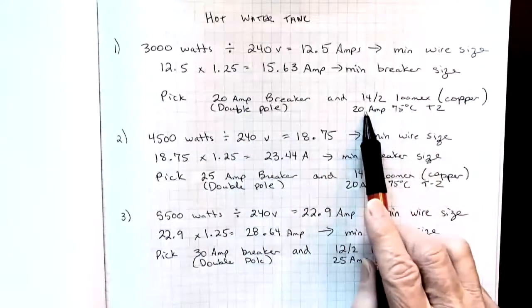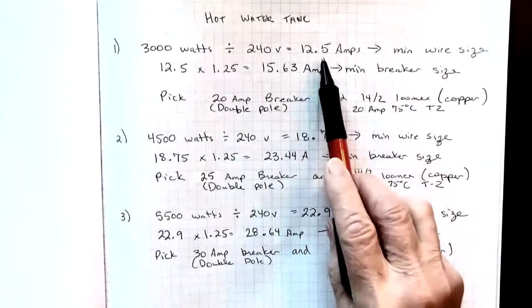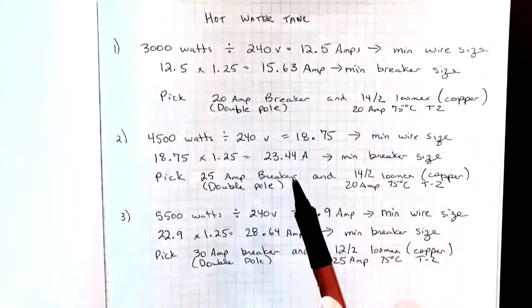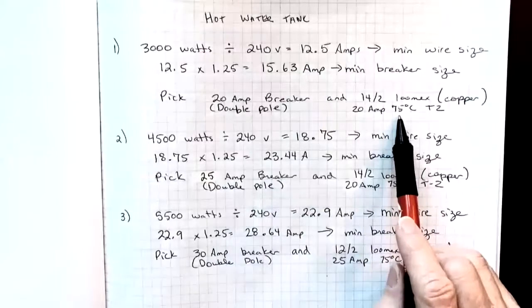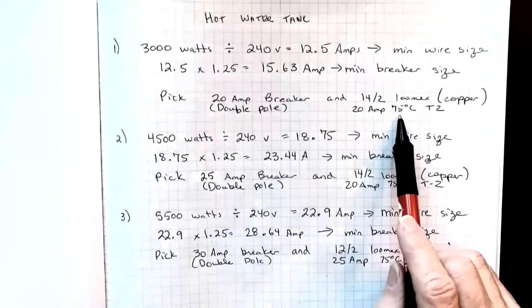If we go to table two, we'll see that it's good for 20 amps in the 75 degree column and we only needed 12.5 amps to cover this load. One thing to check is that the equipment is actually rated for 75 degrees at the terminations.